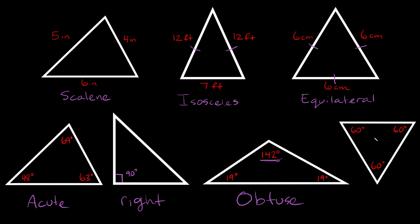Lastly, here we have a triangle where all the angles are the exact same. When you have angles that are the same, you can put little arcs on them to show that they are congruent. A triangle that has three congruent angles is also called an equilateral triangle, which makes sense — this triangle is the exact same as the equilateral one shown by sides. Whether all the sides are the same or all the angles are the same, in either case it's just called an equilateral triangle.